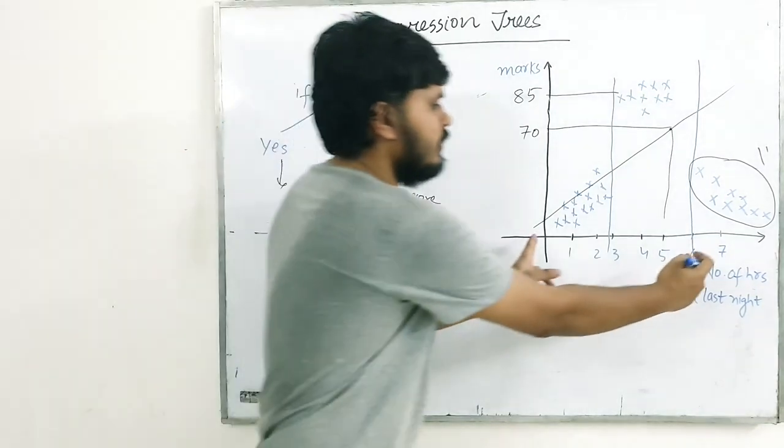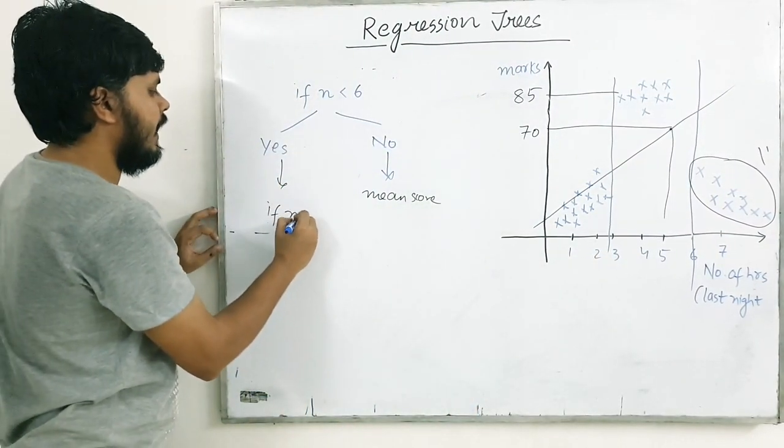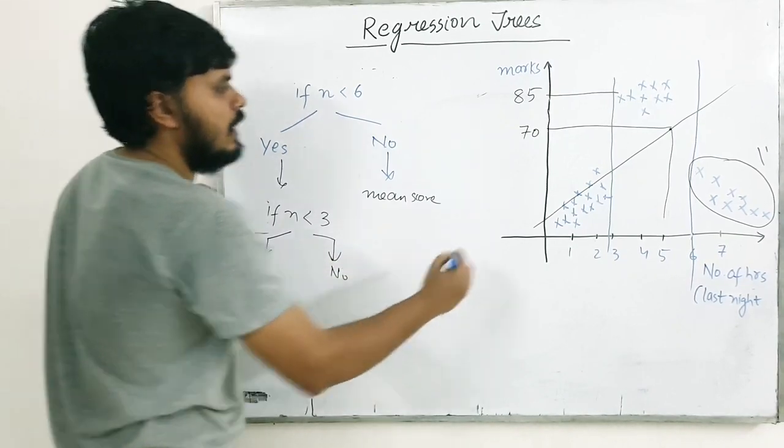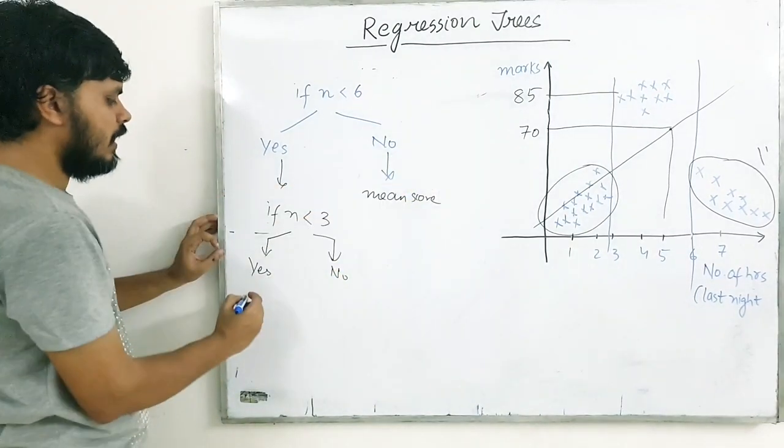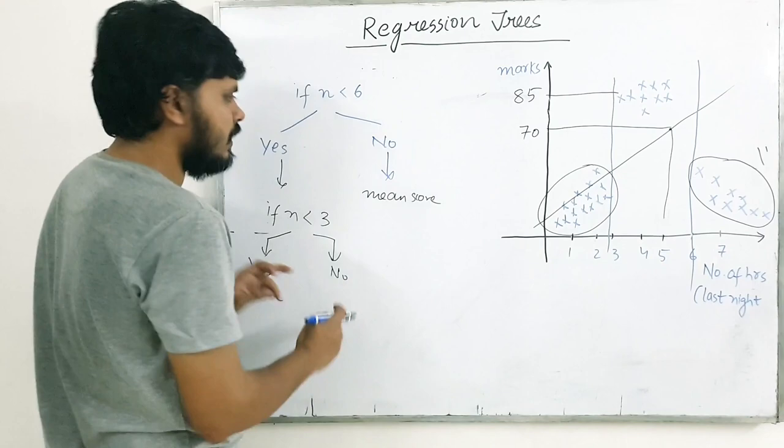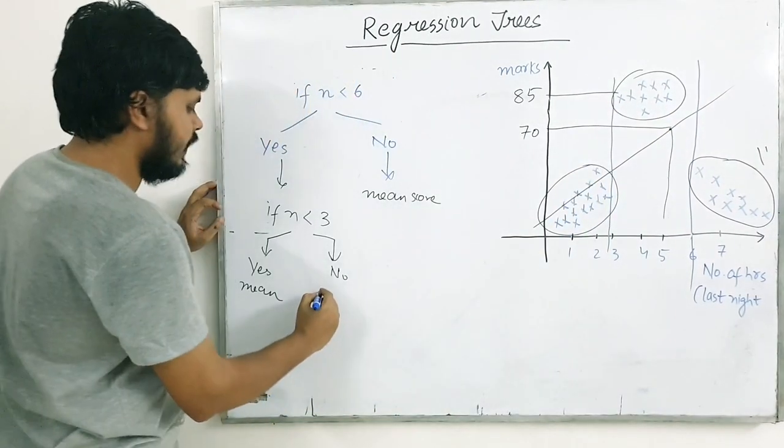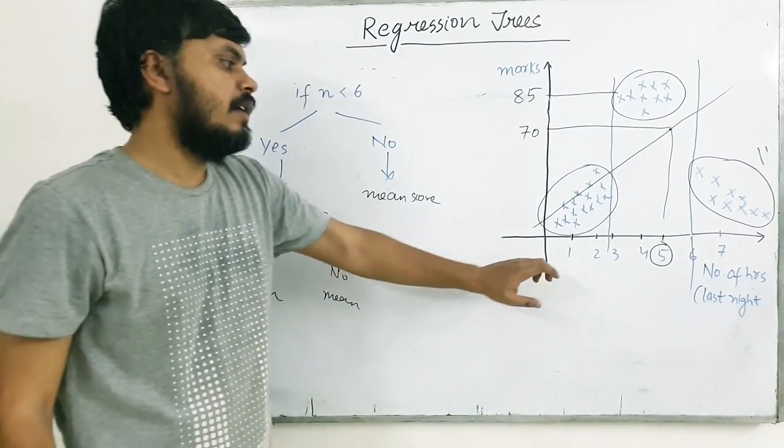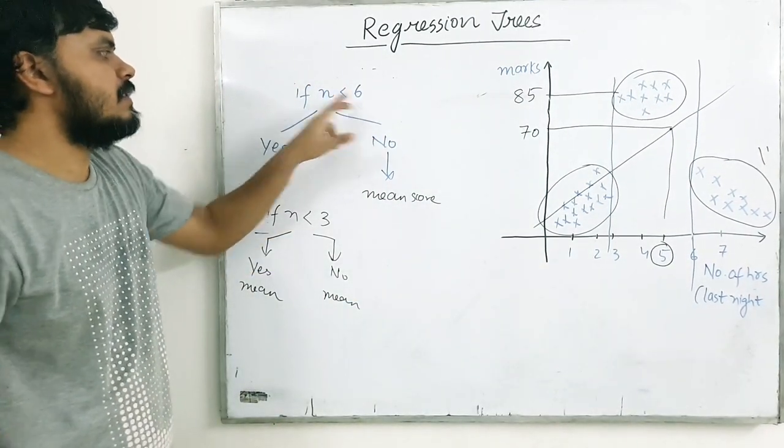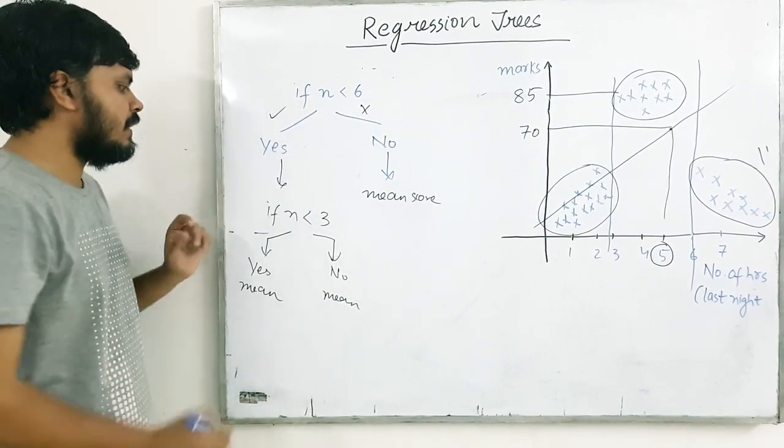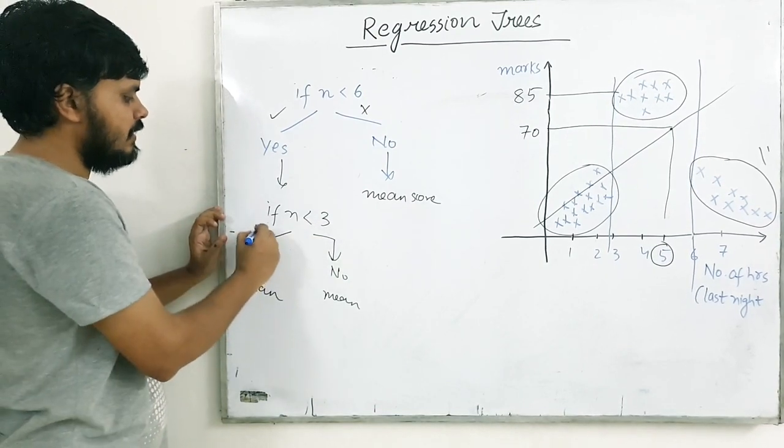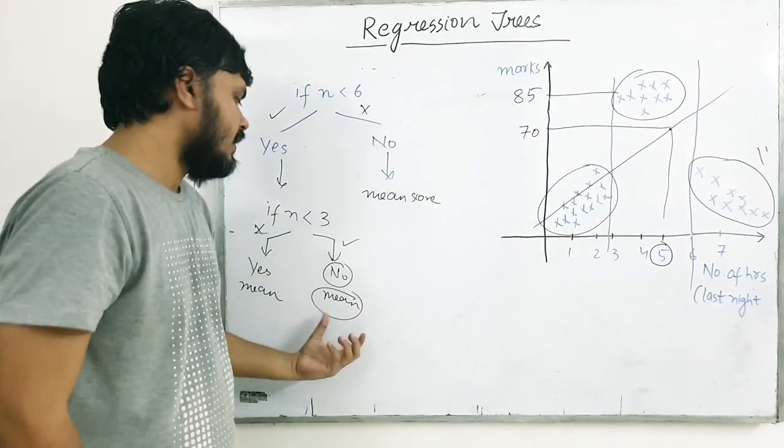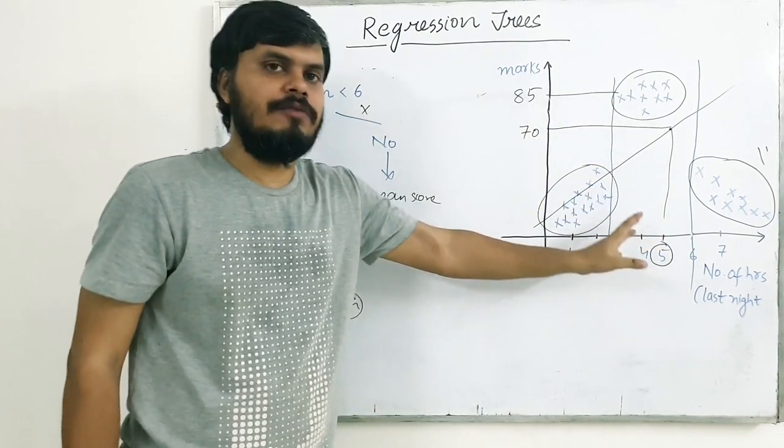Next. Yes. Matlab, haan is range ki baat kar rahe ho. Ab is range mein, aapne phir ek condition kar rahe hai. If, n is less than 3. Yes. No. So, if it's yes, aap in students ki baat kar rahe ho. Right. Aap phir in ka mean nikaaloge. Aur, yahan pe dikhaa doge. Aur, agar aap no ki baat kar rahe ho. Toh aap in students ki baat kar rahe ho. Aap phir inka mean nikaal karke, yahan pe show kar doge. Right. Agar koi naya student aaya. Let's say 5 wala. Ek naya student hai. Mujhe predict karna, uske marks kitne aayenge. Given, uske 5 ghante padhai. So, if n is less than 6. Toh hum yahan pe nahi jaenge. Hum yahan pe jaenge. Yahan pe jaake. First condition. If n is less than 3. Toh hum yahan pe nahi jaenge. Hum yahan pe jaenge. Aur. Yeh wala jo hai. In students ka mean nikaal karke. Display karte hain. And that is how decision trees works in regression problems. Okay.